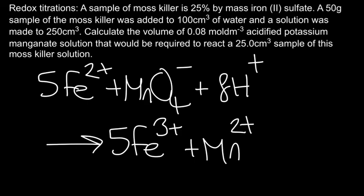We also get some Mn²⁺. The manganese in the MnO₄⁻ was 7+ and now it's 2+ so that's been reduced. And we also get 4H₂O.